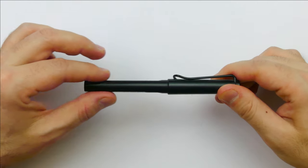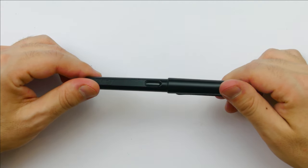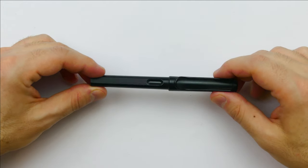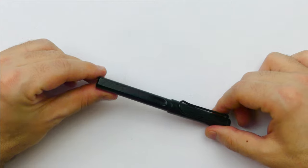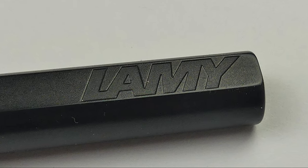On the flat sides there are two ink windows that always line up with the part of the section where you put the proprietary cartridge or converter. Here you can see the Lamy logo on one side, engraved.